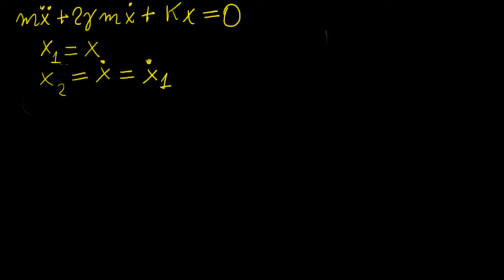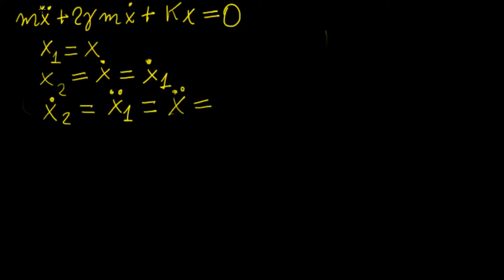Now that we have these things, we can find what the derivative of x2 is. That's going to be x1 double dot. And for this case, because this is basically the highest order variable we can have here — the second derivative — that's the largest thing we can have in this particular equation. We're going to solve for this in the equation and represent it as a function of the lower derivatives and the function itself.